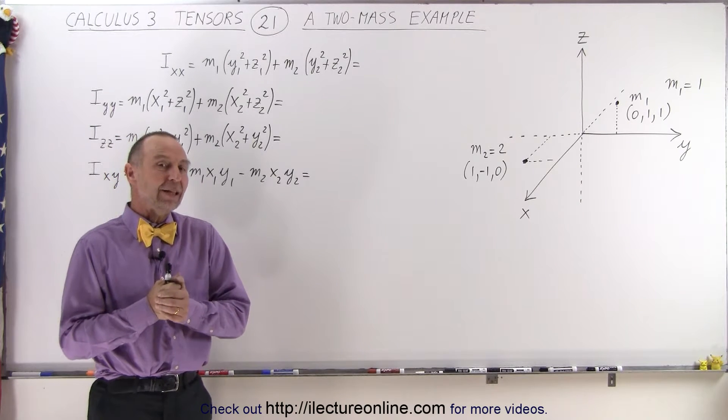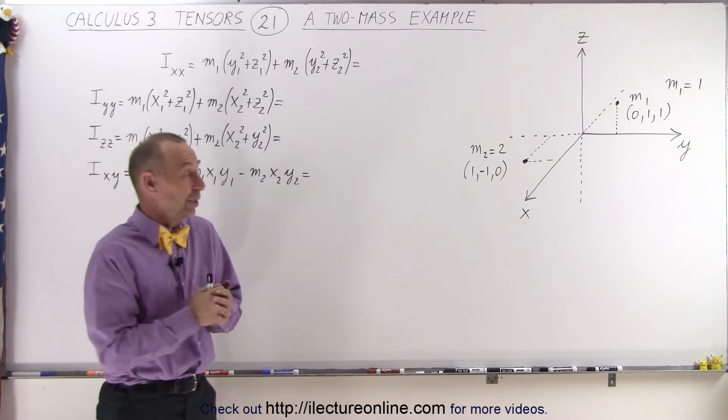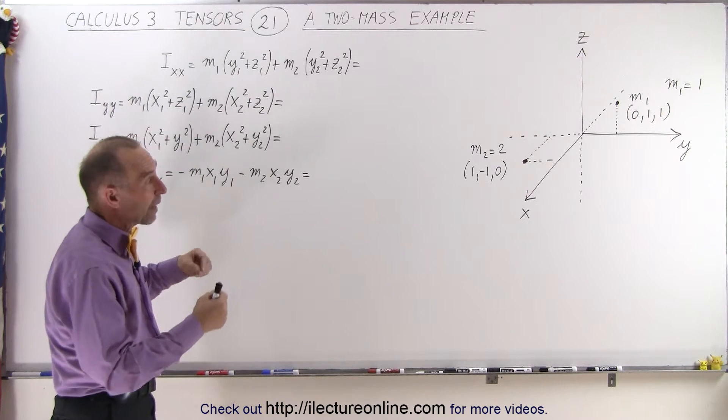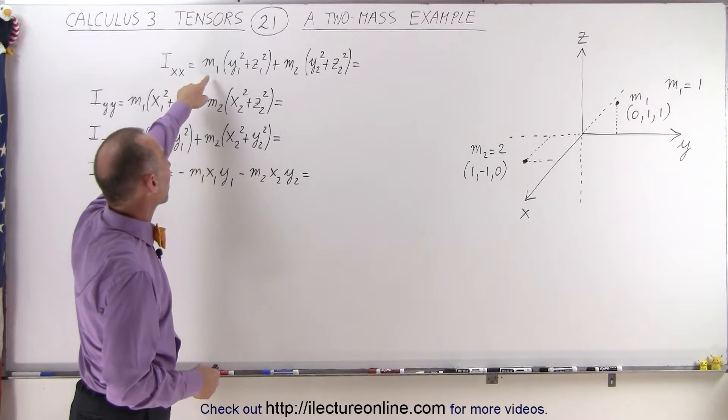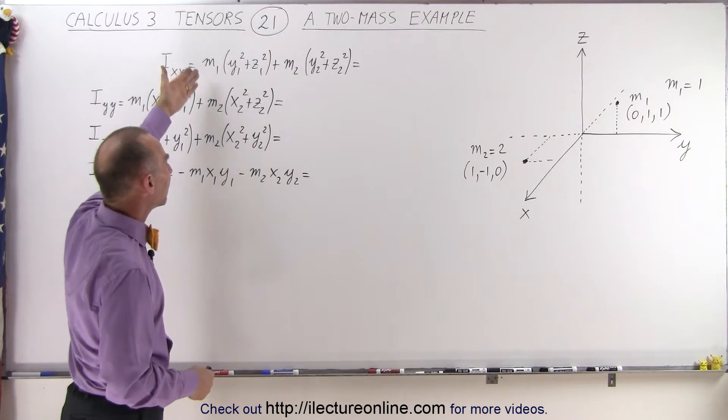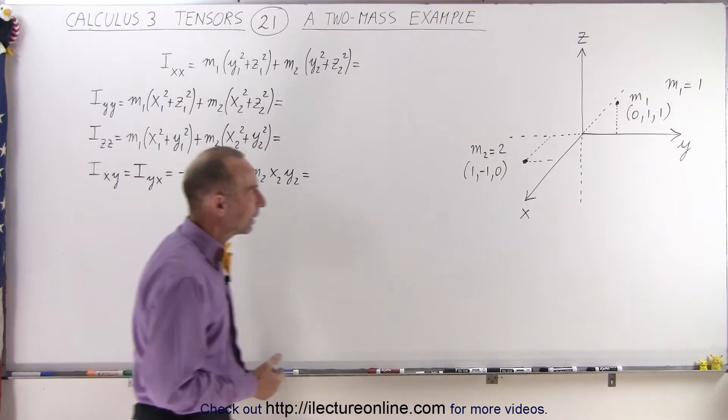Welcome to ElectronLine. Now let's find the inertia tensor, at least some of the elements, especially diagonal elements, for a situation where we have two masses instead of one mass. How is that done? We need to find the contribution of each mass separately in the same way that we did it for a single mass. So let's go ahead and take a look here.